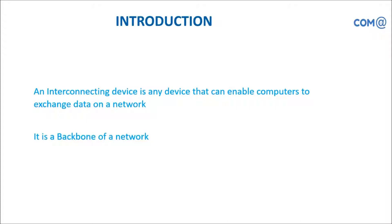For LAN we use switch or hub; in case of WAN we use router. It is an interconnecting device and it is the backbone of a network infrastructure. Without it, we will not be able to establish communication with remote offices. Our office will get isolated if the link is down or the device is down, and we will not be able to do transactions with other offices. That is the importance of having network interconnectivity devices.